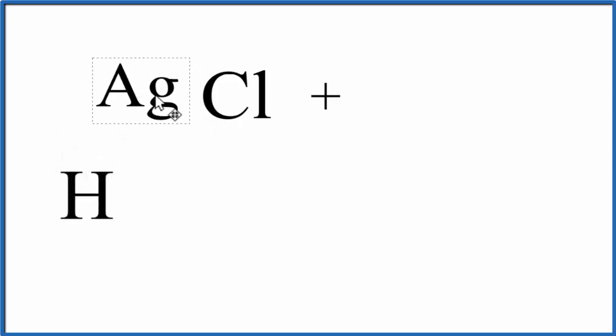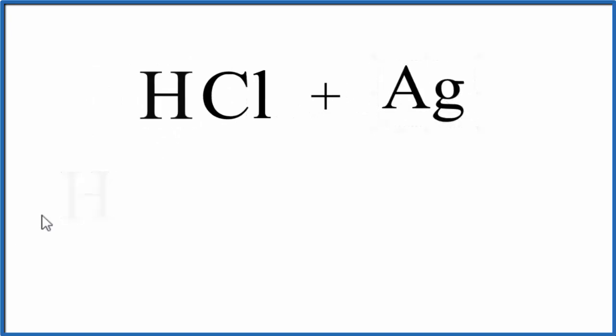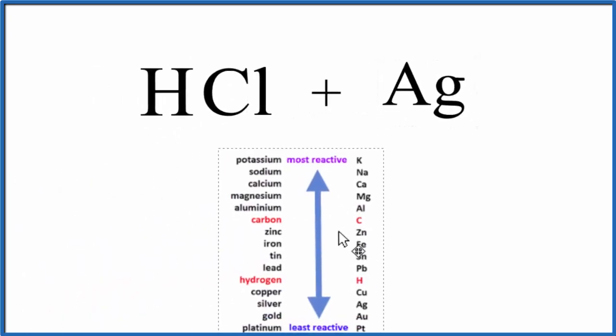But for this to happen, the silver must be more reactive than the hydrogen, so it can push the hydrogen out. Otherwise, the hydrogen would stay with the HCl. So let's put things back here and take a look at what's called the activity series of the metals.